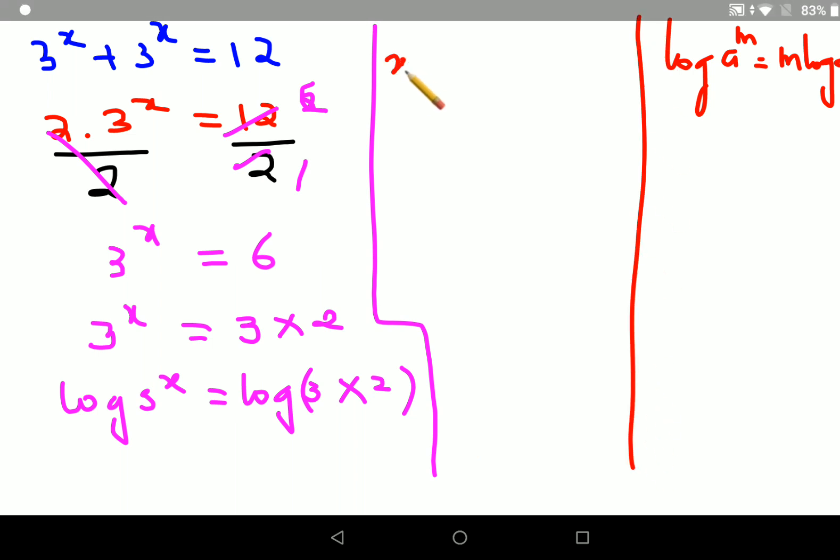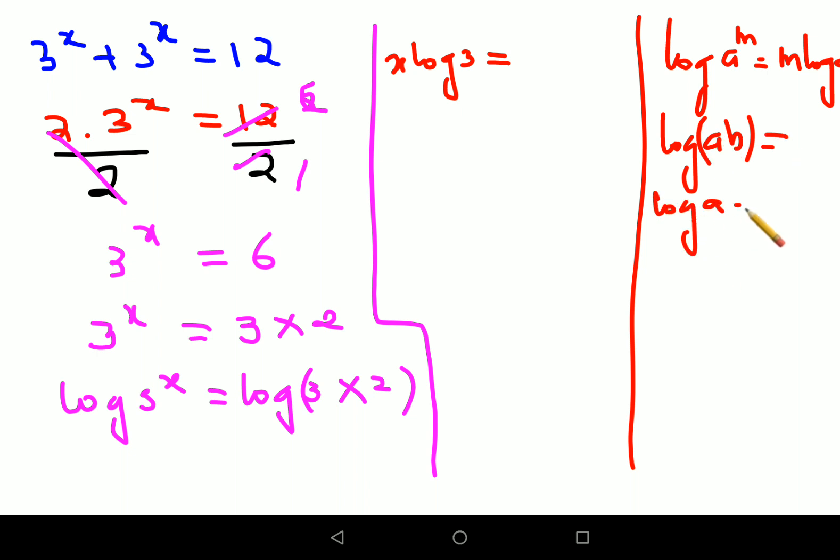And log of a times b can be written as log a plus log b. So instead of log(3 times 2), I can write this as log 3 plus log 2.